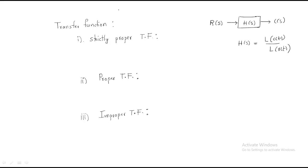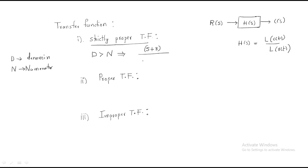First: strictly proper transfer function. The representation is where d is greater than n — d is the denominator and n is the numerator. For a strictly proper transfer function, the denominator is always greater than the numerator. For example, take (s+3) / [(s+2)(s+1)]. Here s+3 is the one zero, and s+2 and s+1 are the poles, so the number of poles is greater than the number of zeros.